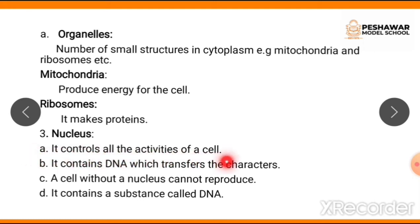The nucleus controls all the activities of the cell. Second, it contains DNA, which transfers characters. DNA stands for deoxyribonucleic acid. DNA contains all the information of an organism — whether it's a plant or animal. In human beings, for example, DNA contains information about hair color, eye color, body shape, height — everything is stored in DNA. A cell without a nucleus cannot reproduce.